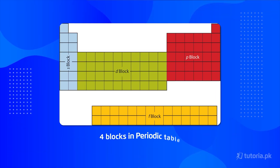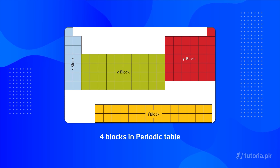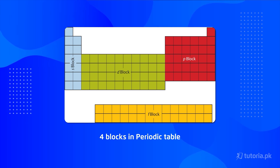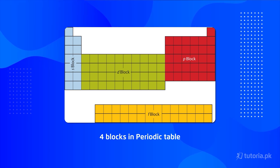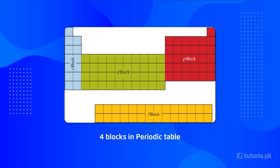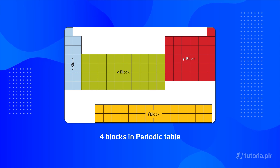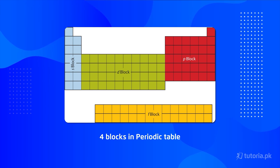The periodic table is also divided into 4 types of blocks: S block, P block, D block, and F block. S block contains elements whose outermost electrons are in the S sub-shell. P block elements have their outermost electrons in the P sub-shell. D block elements have their outermost electrons in the D sub-shell, and F block elements have their outermost electrons in the F sub-shell.